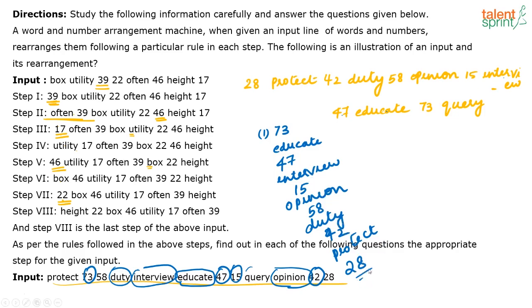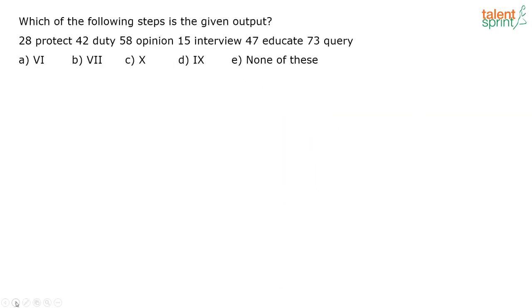If you look here, the part starting from 73 and educate is already arranged — only 'query' still needs to be placed. Counting from the beginning: 1, 2, 3, 4, 5, 6, 7, 8, 9, 10, 11 — that gives us 11 steps arranged so far. Each step, only the newly placed element comes at the beginning. You don't need to write complete steps — just track the first word to know when 28 appears at the start. The correct answer is none of these — it has to be step 11.